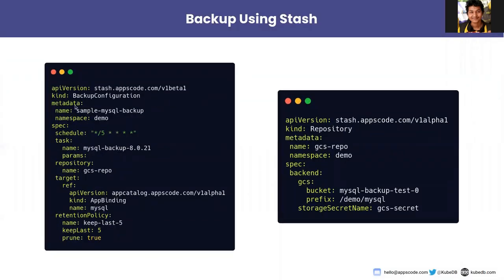For taking backup we need two things: the backup configuration and the repository where we want to store our data. These are managed as custom resources. In the metadata section of the backup configuration, we specify the name, namespace, and schedule — in this case, every five minutes it will trigger a backup. In the repository section we are referring to the GCS repo that will be created, and in the target section we are referring to an app binding to connect with the target database.